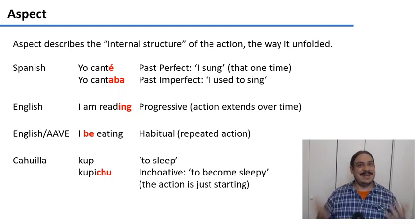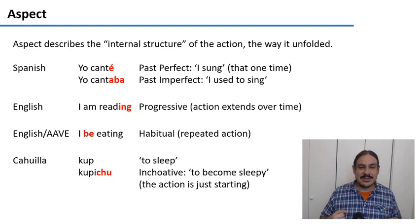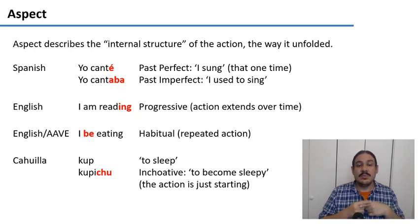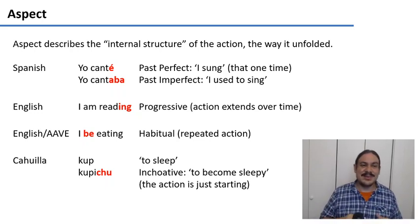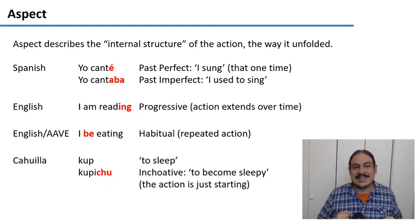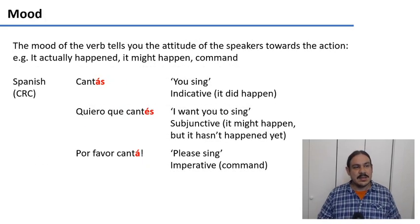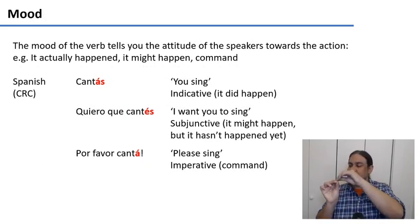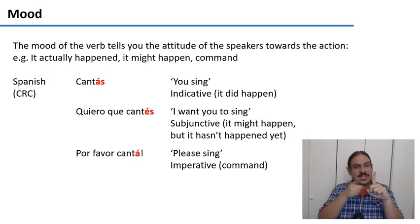There are many aspects. Kaviyya has one called the inchoative aspect, which tells you that something is just beginning. So 'kup' means to sleep, and 'kupicu' means to become sleepy — to be starting to sleep. Latin, for example, also had inchoative aspect. So to recap: tense is the relationship in time, and aspect is the internal temporal structure — whether something stops or continues.